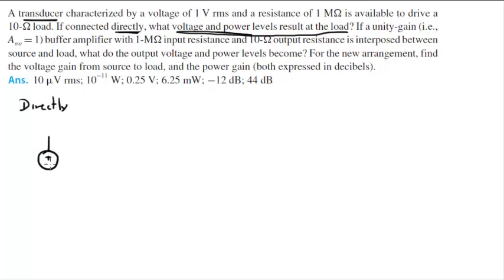So directly, we have the transducer, which again is a signal generator VS, and it has a resistance of 1 megaohm, and it is connected to a 10 ohm